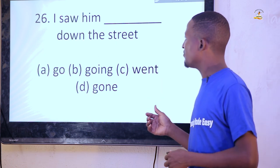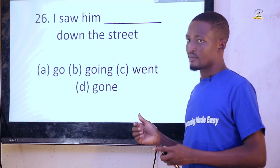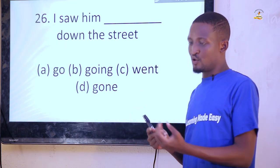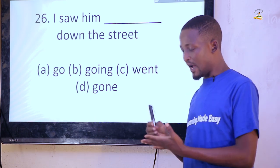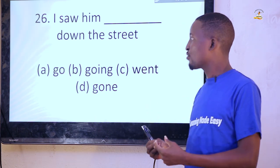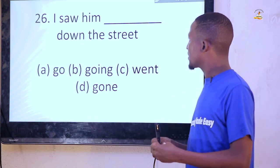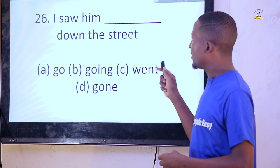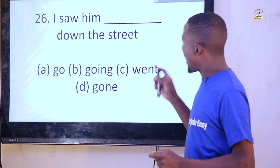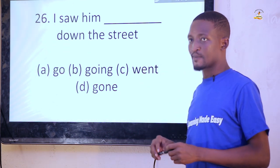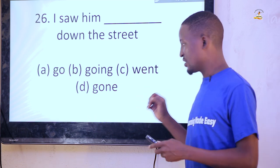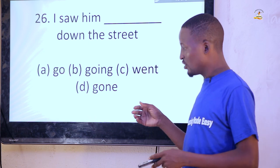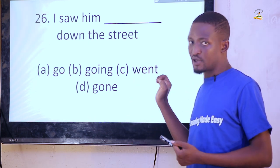'I saw him dash down the street.' This is the bare infinitive — 'I saw.' When you have verbs like 'saw,' 'had,' 'allowed,' these verbs take bare infinitives. The rule says the next verb should be a plural present verb. 'I saw him go down the street.' You cannot say 'going,' 'went,' or 'gone.' It must be: I saw him go down the street.